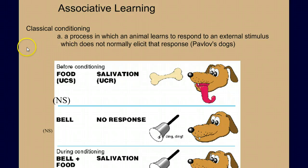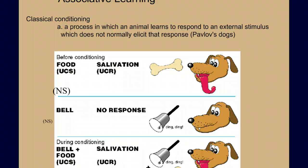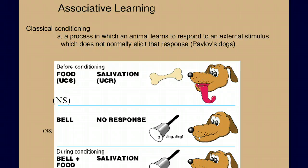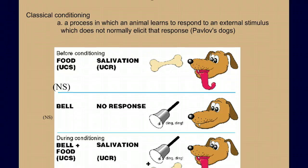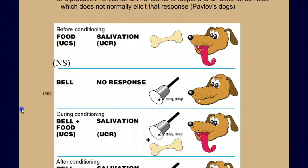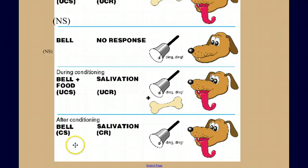Moving on to more complex learning: associative learning. The first type is classical conditioning — the story of Pavlov's dog and the association of one stimulus with another. The unconditioned stimulus — the food — is paired with a neutral stimulus — the bell — such that after repeated pairings, the bell becomes a conditioned stimulus eliciting a conditioned response. Try to think of a more realistic, real-world animal behavior example of associative learning before your test.